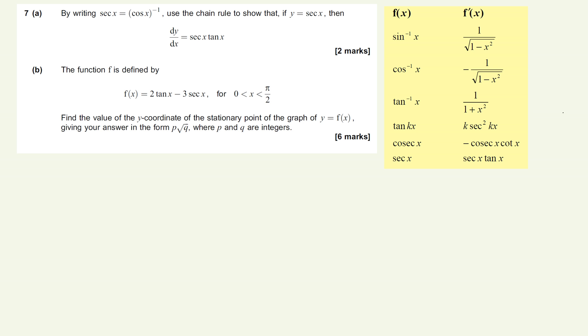So for part B then, I've just brought in a little snippet of your formula book to remind us how to differentiate these two functions. So we've got our function of x, which is 2 tan x minus 3 sec x. And quite important for this question, it's only being defined between 0 and pi by 2, or 0 and 90 degrees if you'd rather. So we're only looking at a small part of this function. So we're trying to find the value of the y coordinate of the stationary point on this curve. So to find stationary points, we need to find the gradient. So differentiate and put it equal to 0.